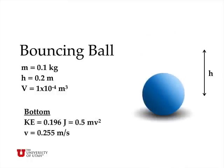At the bottom of its trajectory, it has, just before it hits the ground, it has a lot of kinetic energy of motion. And that, by conservation of energy, has to be the same 0.196 joules, and that's one-half mv squared, the kinetic energy. And so we can solve for the velocity of the ball just before it hits the ground of 0.255 meters per second.